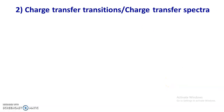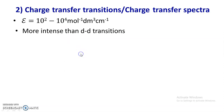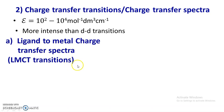The second type is charge transfer transitions or charge transfer spectra. These involve promotion of an electron from a ligand orbital to a metal orbital or vice versa. The molar extinction coefficient values for these transitions are 10² to 10⁴, and charge transfer transitions are more intense than d-d transitions. There are two types: ligand-to-metal charge transfer (LMCT) and metal-to-ligand charge transfer (MLCT).